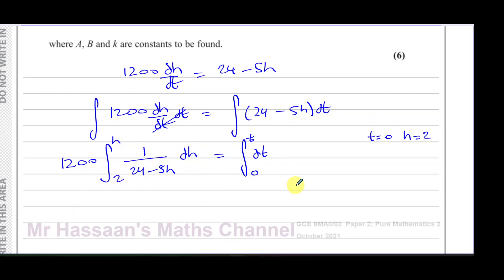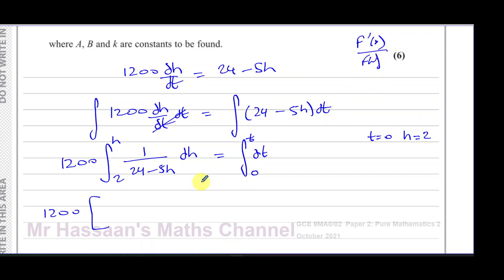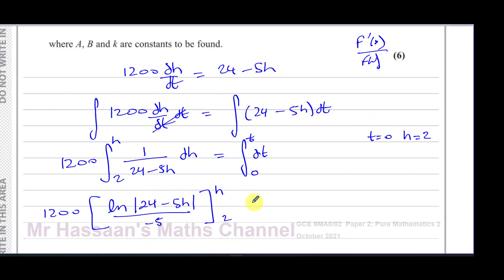Integrating the left side: since the integrand is of the form f'(x)/f(x), we use the natural log. The integral of 1/(24 − 5h) dh = ln|24 − 5h| / (−5). Evaluating with limits and the right side integrating to t, we get: 1200 × [ln|24 − 5h| − ln|24 − 10|] / (−5) = t, which simplifies to −240·ln|(24 − 5h)/14| = t.